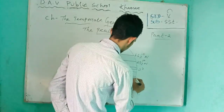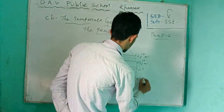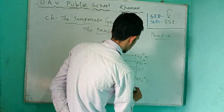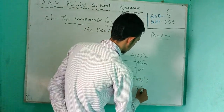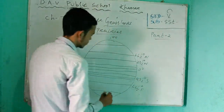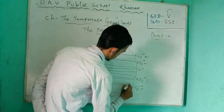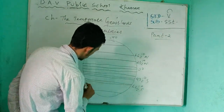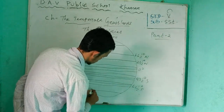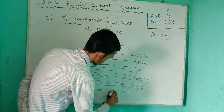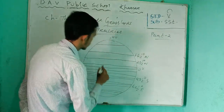Then also 23.5 degrees south and 66.5 degrees south. Take 5 degrees in the upper part and 5 degrees in the lower part as well.